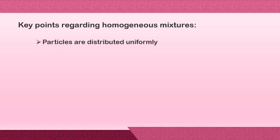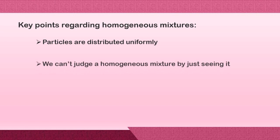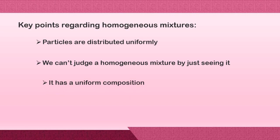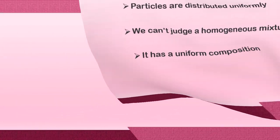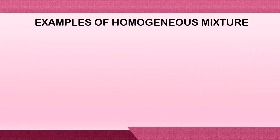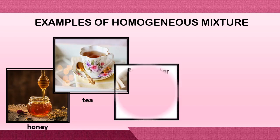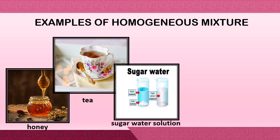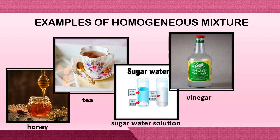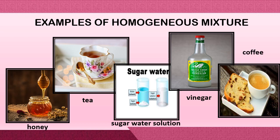To fully understand what a homogeneous mixture is, here are some key points. First, particles are distributed uniformly. Second, we cannot judge a homogeneous mixture just by seeing it. Third, it has a uniform composition. So here are some examples of homogeneous mixture: honey, tea, sugar water solution, vinegar, and coffee. As you can see in my examples, they are all in a liquid form.